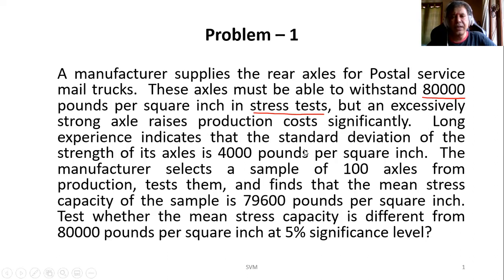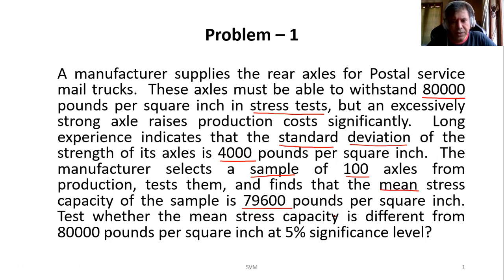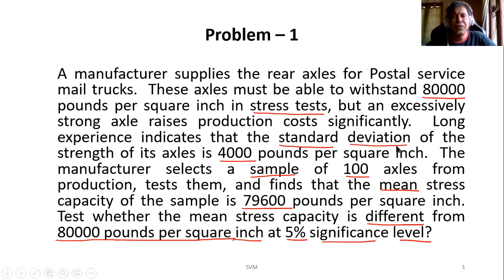Long experience indicates that the standard deviation is 4,000 pounds per square inch — that is the standard deviation of strength. The manufacturer selects a sample of 100, and the sample mean is 79,600. They are asking us to test whether the stress capacity is different from 80,000 pounds per square inch at 5% significance. These are the things we need to convert into notation.